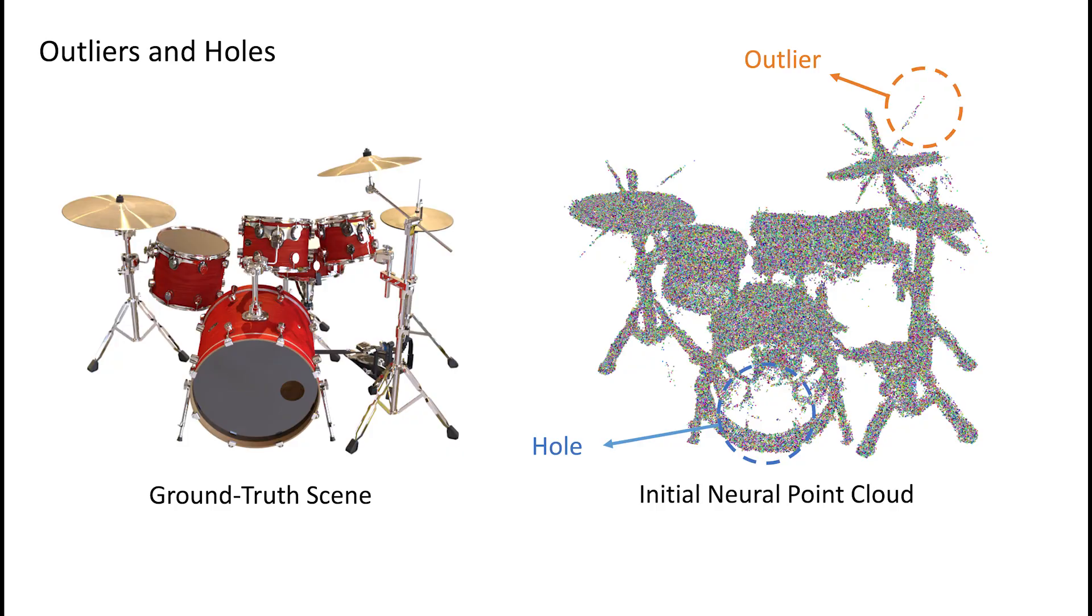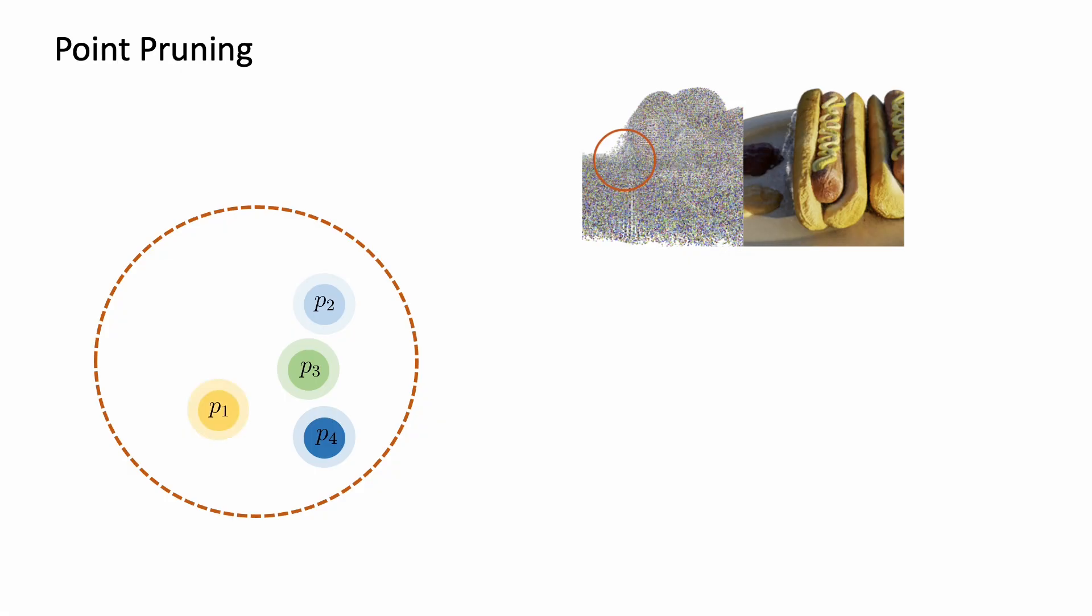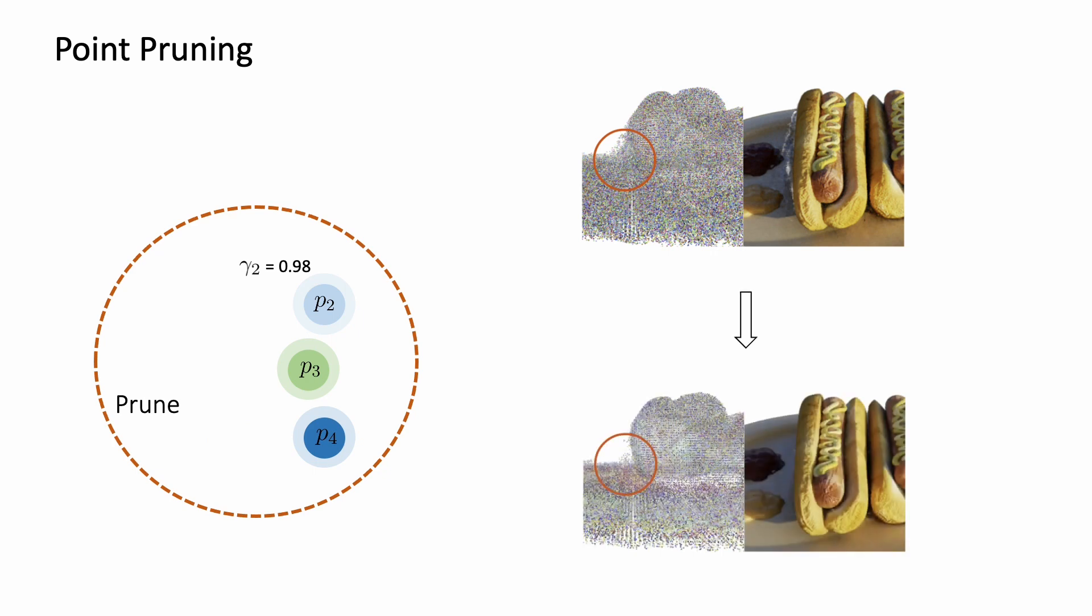We also propose point pruning and growing techniques to address outliers and holes in the initial point cloud. Here we have outlier point P1. Since its point confidence, gamma 1, will be driven to zero during optimization, we can prune these outliers and improve both the point cloud and the rendering results.